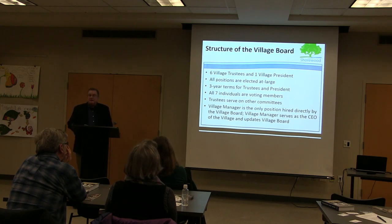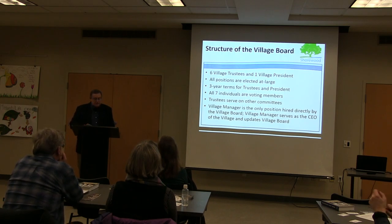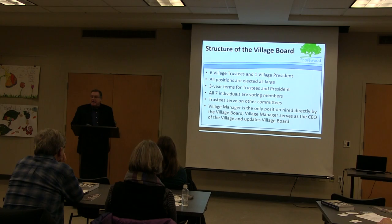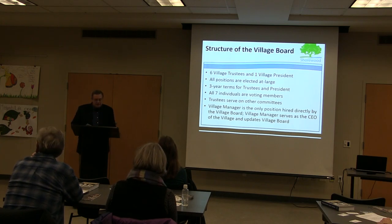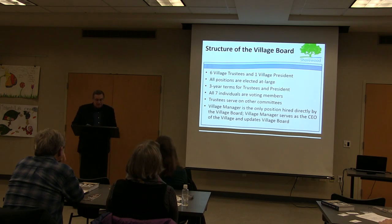Cities and villages are creatures of the state. We exist because of state statutes that grant us broad authority to govern ourselves in local matters without state interference. The term used to describe this grant is home rule. Cities and villages have different structures. A city has a mayor and a common council, which consists of alder persons elected in districts. The mayor is elected at large and serves as the chief executive officer of the municipality. The common council serves as the legislative body. By contrast, a village consists of a village board made up of trustees and a village president, who is also one of the trustees. The village board as a whole serves as both the executive officer and the legislative body.